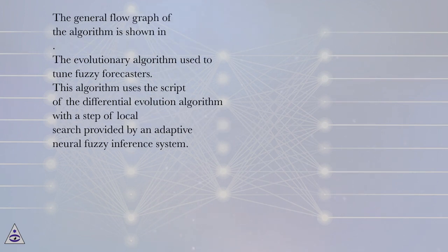The general flowgraph of the algorithm is shown. The evolutionary algorithm is used to tune fuzzy forecasters. This algorithm uses the script of the differential evolution algorithm with a step of local search provided by an adaptive neural fuzzy inference system.